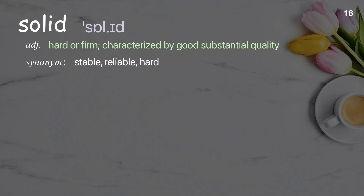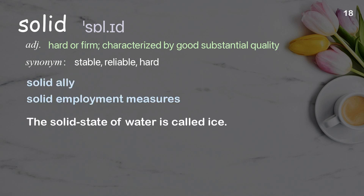Solid: hard or firm, characterized by good substantial quality. Examples: solid ally, solid employment measures. The solid state of water is called ice.